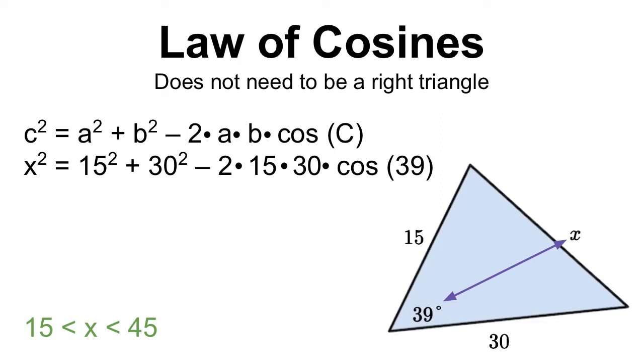I'm going to start my equation with X squared. The reason I'm going to start my equation with X squared is because I know that's opposite from the 39 degree angle. The 39 is going to be what we take the cosine of.